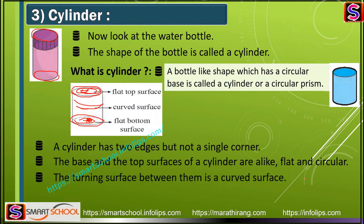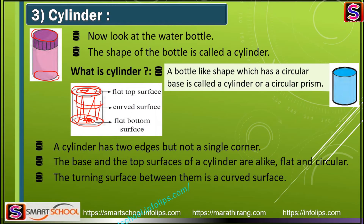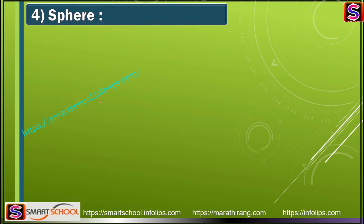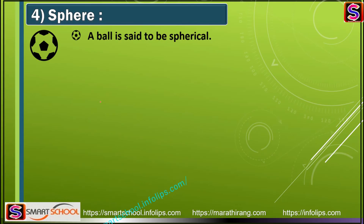The base and top surface of the cylinder are flat and circular. The turning surface between them is called the curved surface.